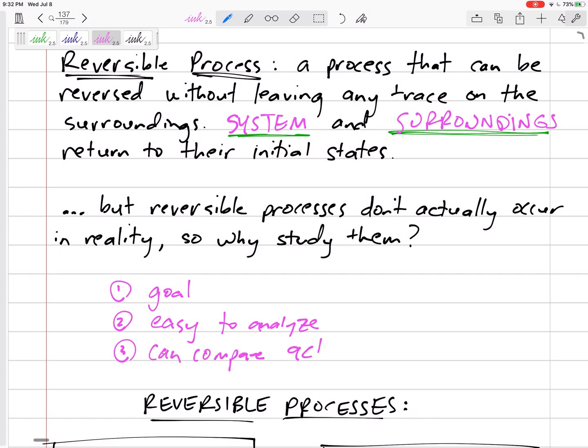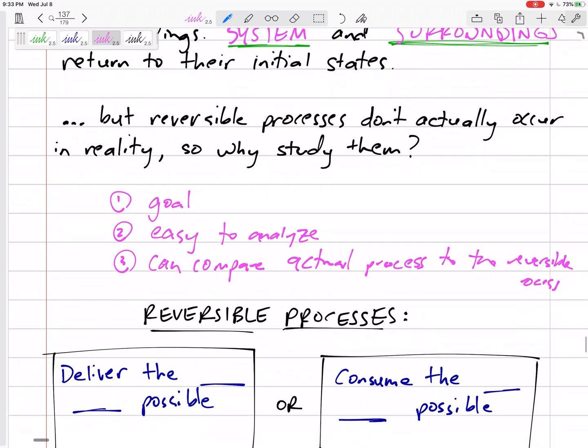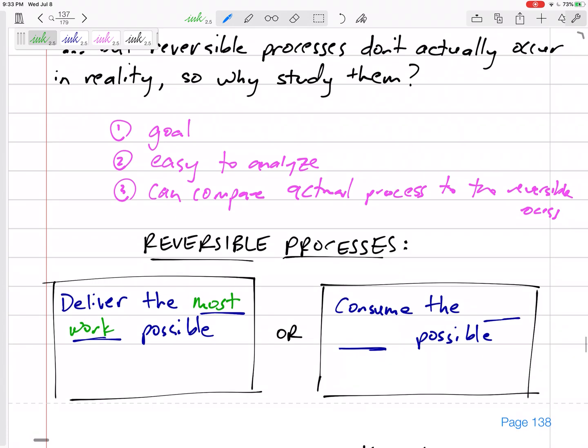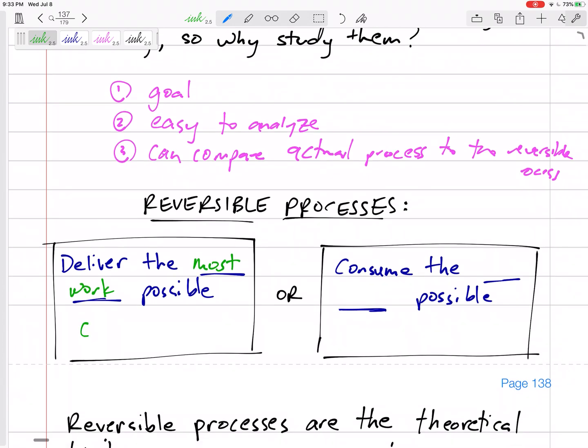Reversible processes are the ones that will deliver the most work possible if that's what we're aiming for, like a car engine or a turbine. We're trying to get work out of it.